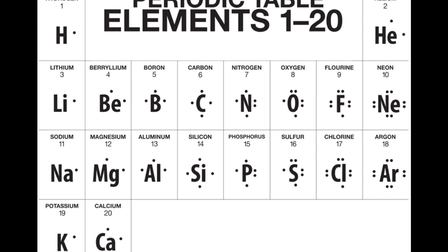Hydrogen has one dot, helium goes up to two. The dots go counterclockwise: lithium starts on the right-hand side, beryllium goes up to the top, boron works its way around. We repeat the process once four valence electrons are placed. Nitrogen does the same thing, going all the way up to neon where the valence energy level is full. We do the same for argon, then potassium and calcium. We can do this for elements beyond 20, but it's too complicated for our class, so we'll focus only on the first 20 elements.